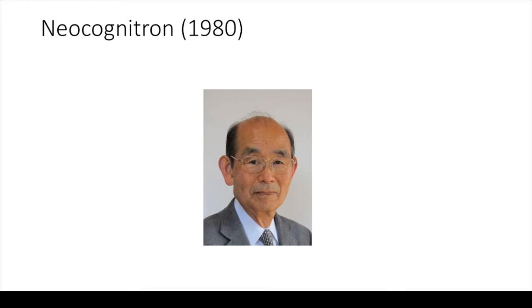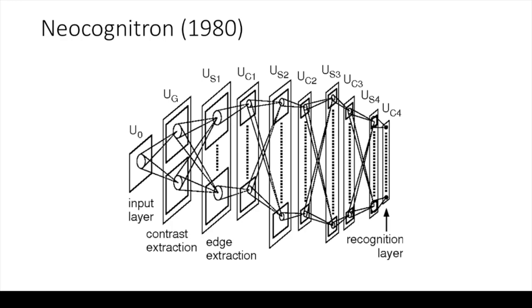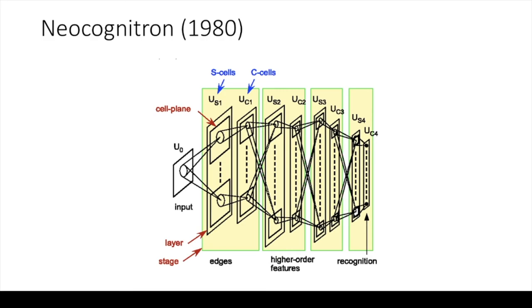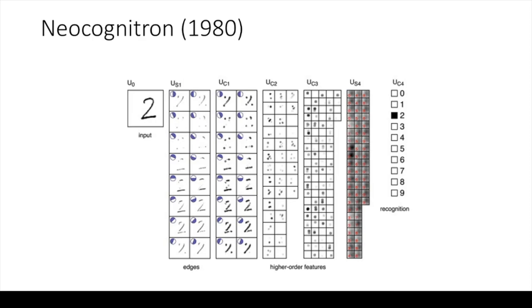Inspired by Hubel and Wiesel's discoveries in the hierarchical nature of visual processing, Japanese engineer Kunihiko Fukushima proposed in the 1970s a series of neural network architectures for machine vision, which came to a peak in a device that he called the neocognitron. The layers of the neocognitron were arranged hierarchically so that those units closer to the input represent line orientations, while successive layers combine the material from previous layers into more complex representations. Fukushima even borrowed Hubel and Wiesel's terminology of simple and complex cells to describe the units in the first and second layers, respectively, of the neocognitron.